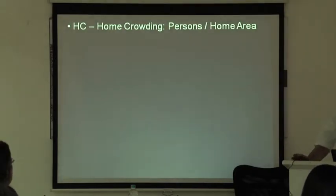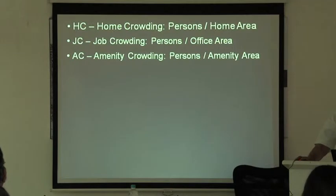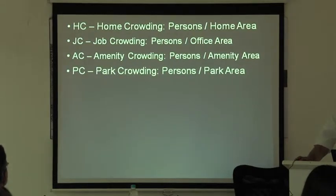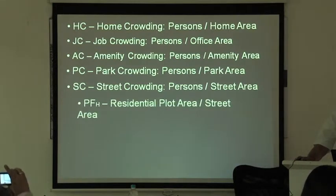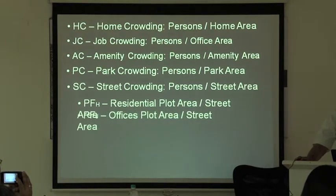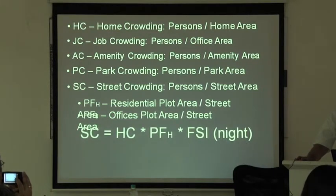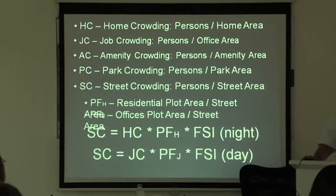There are other kinds of crowding we could look at. Home crowding is persons per unit of home area. Job crowding is number of persons per office area. Amenity crowding is the number of persons per amenity area — amenities being hospitals and schools. Park crowding is persons upon park area. Street crowding is persons upon street area. You could also have plot factor subscript H — plot factor for homes upon street area — and plot factor J, which is offices plot area upon street area. The formula would then be: street crowding equals home crowding times plot factor for homes times FSI for daytime numbers.